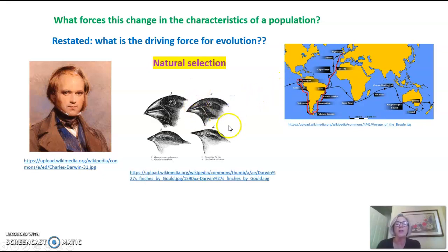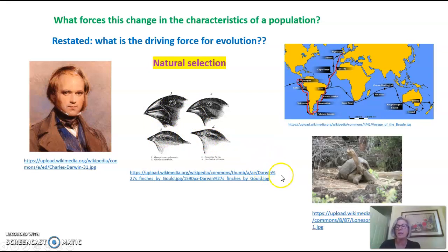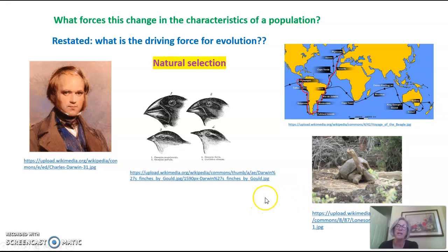Darwin is famous for his observations of the shape and size of the beaks of different finch populations on different islands. He found that the shape and size of the beak correlated to the food sources available on the different islands. He also studied different tortoise populations on each of the Galapagos Islands — they all had different shell shapes and neck lengths. This is a picture of Lonesome George, who was the last member of his species on one specific Galapagos Island, and he died many years ago.